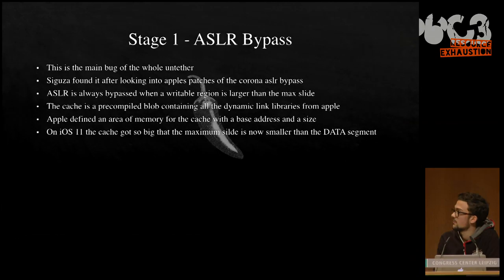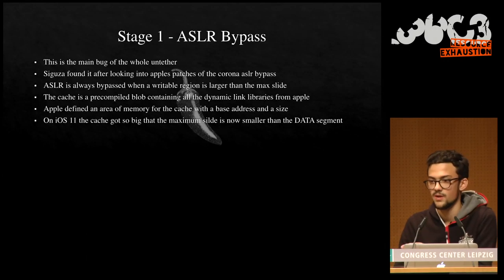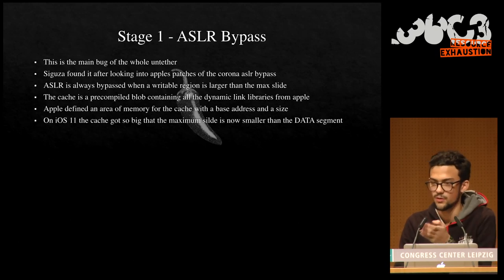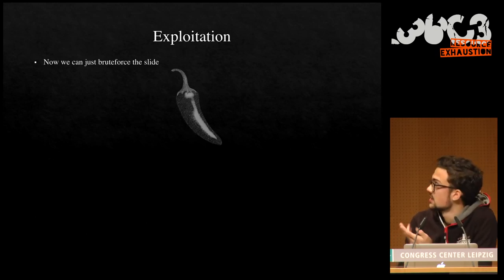Apple defines an area of memory for the cache with a hard-coded base address and size. On iOS 11 the cache got so big that the maximum slide is now smaller than its data segment — so the ASLR bypass condition is satisfied. Interestingly this same thing happened in iOS 7, when the cache exceeded 500 MB. Apple increased the maximum slide to 1 GB but didn't add any assertions. In iOS 11 it happened again, and we believe Apple didn't even notice until iOS 12 — where the cache exceeded 1 GB, causing panics, so they increased it to 4 GB. We might see this recur around iOS 15.